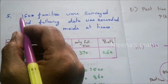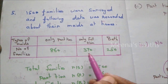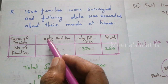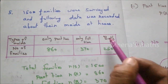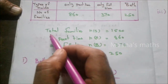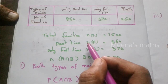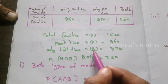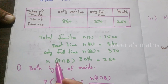Problem 5. Five hundred families were surveyed and the following data was recorded about their helpers at home: only part-time helpers — 860 families; only full-time helpers — 370 families; both full-time and part-time helpers — 250 families. Total families N of S equals 1500.